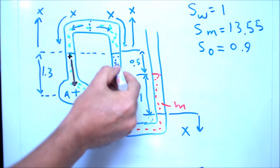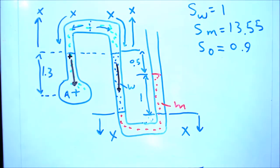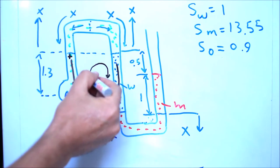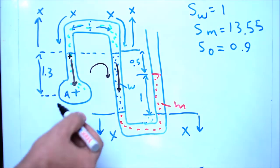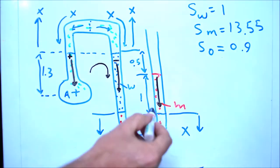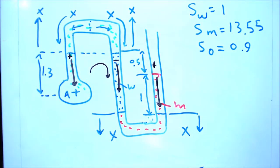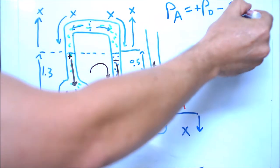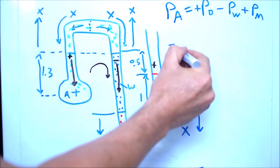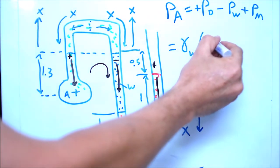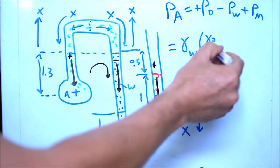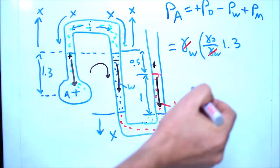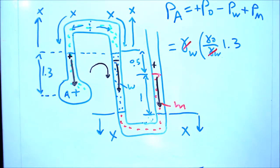The first column is oil, pushing inward toward point A - positive pressure. The second column is water; if we allow it to escape it goes to the outer side, pulling out from point A - negative pressure. The third column is mercury; if allowed to move it pushes toward point A - positive pressure. A good hint: take gamma water outside and use S for all liquids. S equals gamma of any liquid divided by gamma water, so gamma water cancels out.